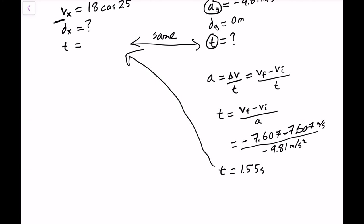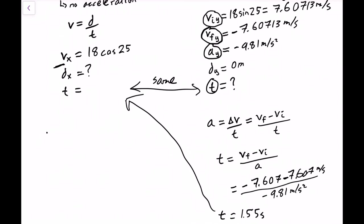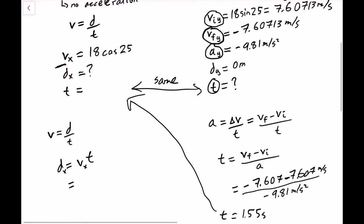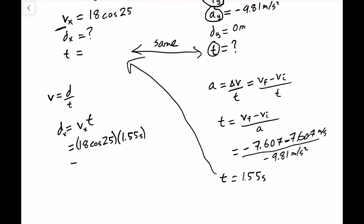And of course, like I mentioned earlier, this time is going to be the same time that it takes to travel horizontally. So we're almost done here. We had V is equal to D over T. Speed is equal to distance over time. If we're looking for our distance, well, we just have to multiply speed by time. If we're talking about the X direction, we can put the little subscripts in. And so V in the X direction we said was 18 cosine 25 multiplied by T, which was 1.55 seconds. And we end up with a distance that they traveled of 25.3 meters.